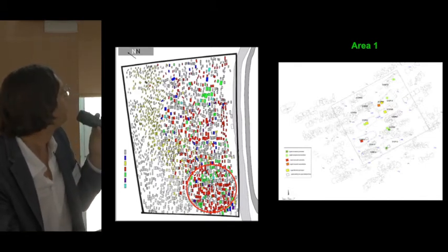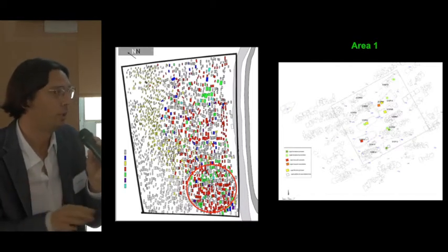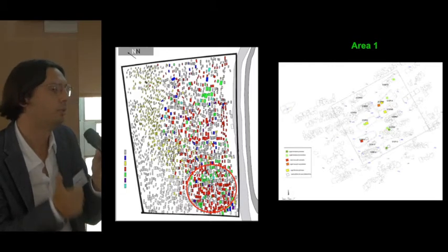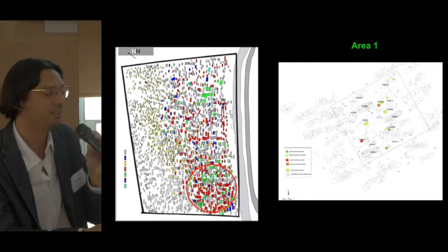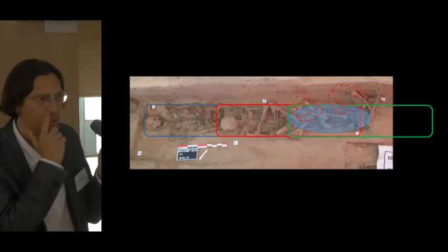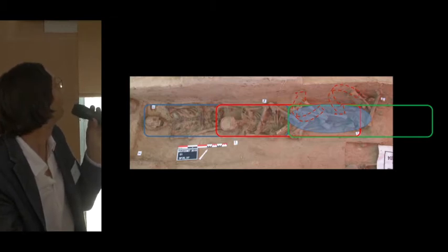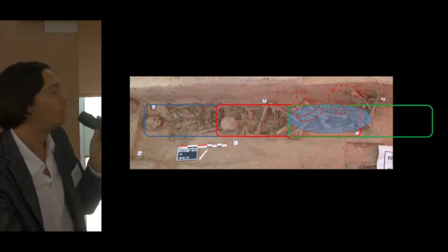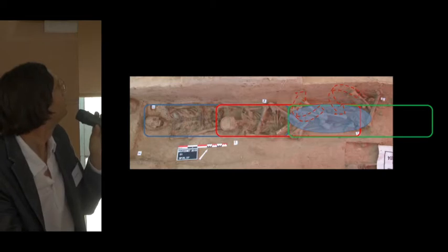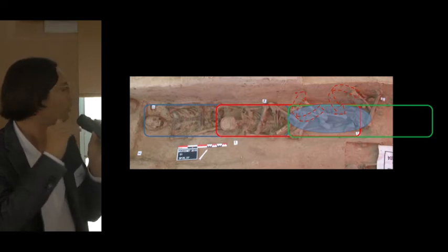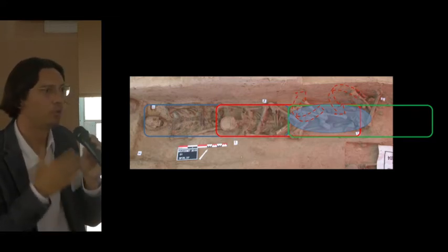We excavated another part of the cemetery last week, and the biological selection there is totally different — female, male, and children of different types. So the population represented in the cemetery is different across areas. With archaeothanatological analysis, we can present a reconstruction of the cemetery organization.